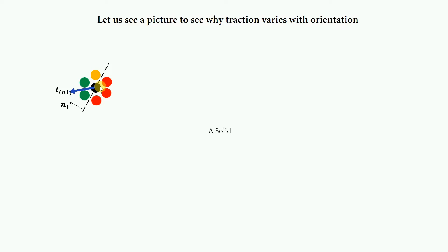Now let us change the orientation of this plane. We are now making the observation from the top. On this side there is one red particle, half green, half red, and one yellow particle. The traction vector should now be tilted toward the red part because they pull this particle with a larger force compared to the others. The direction and magnitude both change with this new orientation.